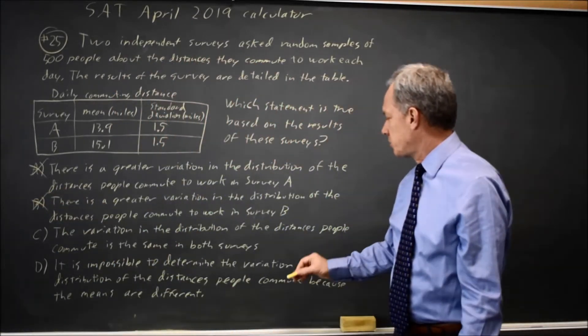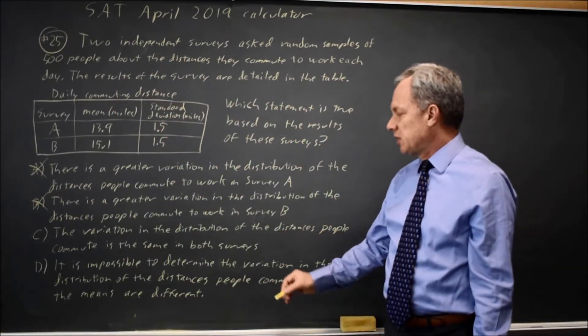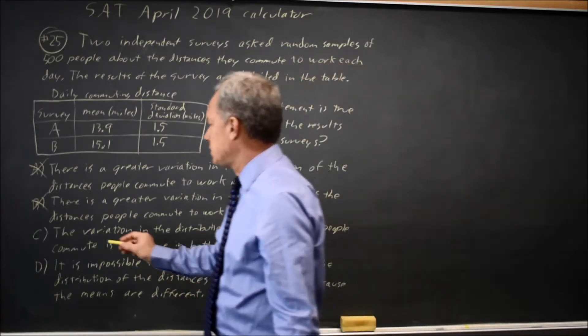Choice C, the variation in the distribution of the distances people commute is the same in both surveys. This is correct.